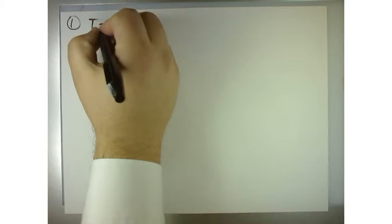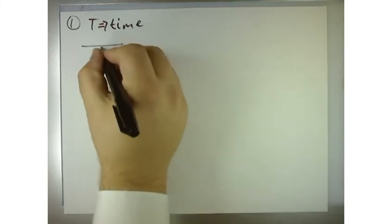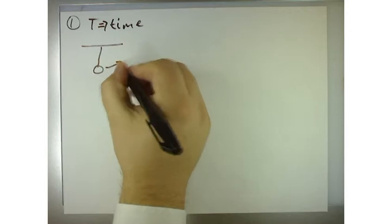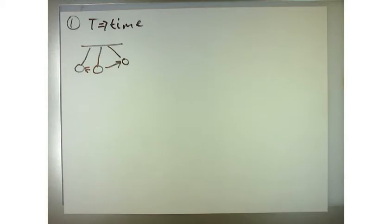So in example number one, I'll read it from the textbook. From empirical evidence, the laws of physics have found that the period of time t — remember that t is time — for the full swing of a pendulum varies as the square root of the pendulum's length, provided the swing is small relative to the length of the pendulum. Express the relationship as a power function.